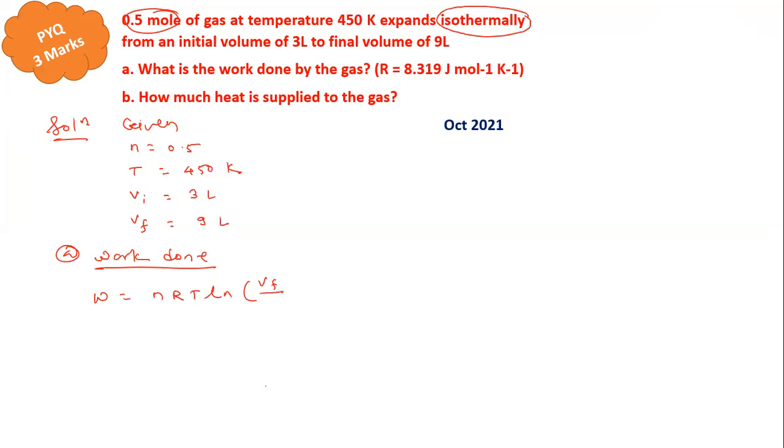We can also write this same formula with log to base 10 by multiplying 2.303: W = 2.303 nRT log(Vf/Vi). Now let me substitute the values: 2.303 multiplied by number of moles 0.5, R is given as 8.319, T is given as 450.